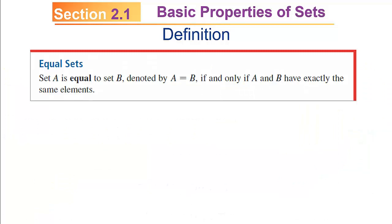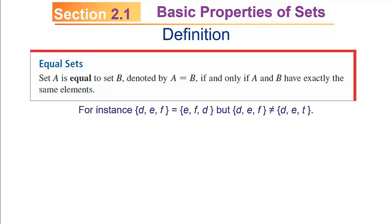We also talk about equal sets. A set A is said to be equal to set B, denoted A equals B, if and only if A and B have exactly the same elements. For example, the set containing D, E, and F equals the set containing E, F, D — there's a D in both, an E in both, and an F in both. But the set containing D, E, and F is not equal to the set containing D, E, and T, because one has F and the other has T. They have to have exactly the same elements, and the order of sets does not matter.